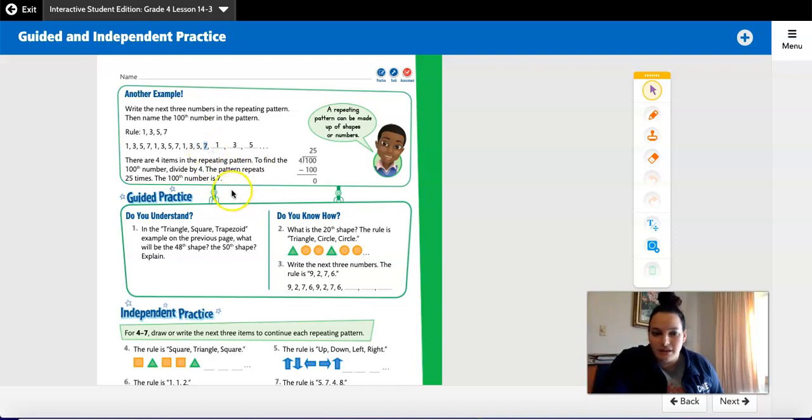The 100th number is going to be 7. Since it's even, if you get an even number here with no remainders, your answer is always going to be the last number in the pattern. This is 7.